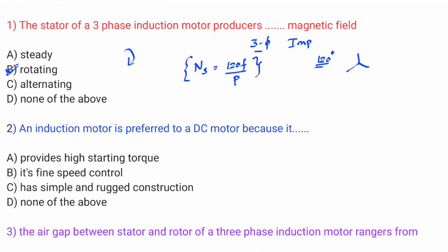This is very important. The formula is Ns = 120F / P. The induction motor is preferred over a DC motor. Compared to DC, induction motor has simple and rugged construction.